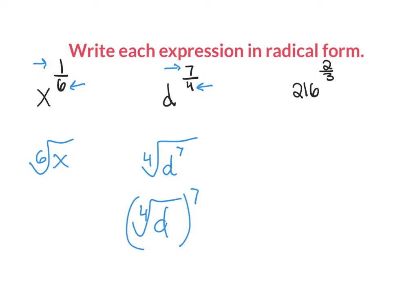The last one has numbers, so I can evaluate it all the way. The denominator 3 is my root, so I have the cube root of 216 squared. The cube root of 216 is 6, but we still have the squared, so 6 squared is 36.